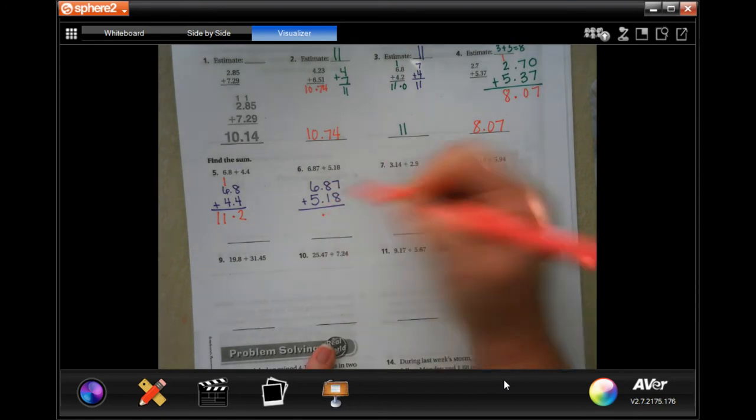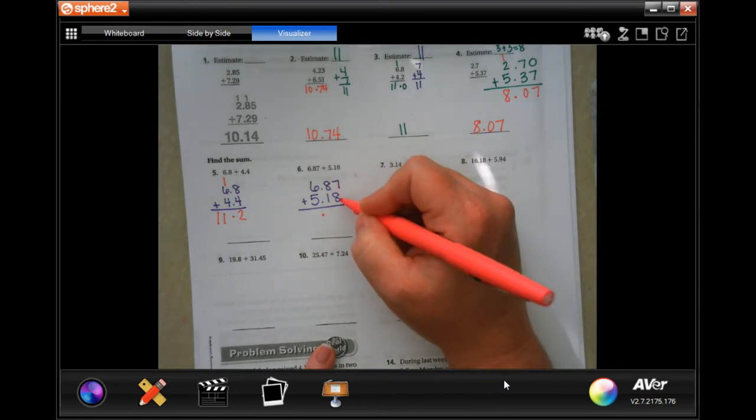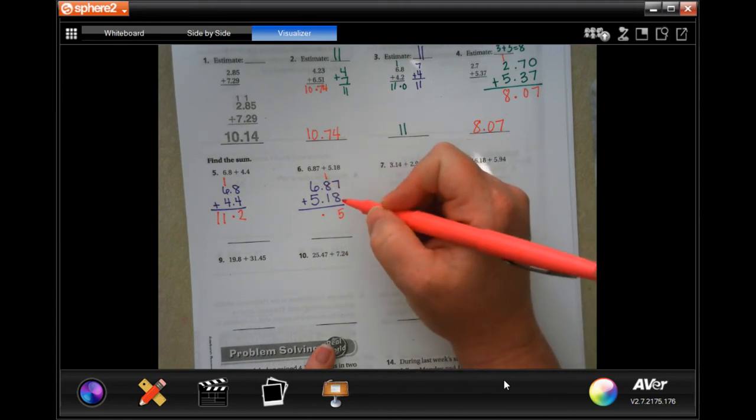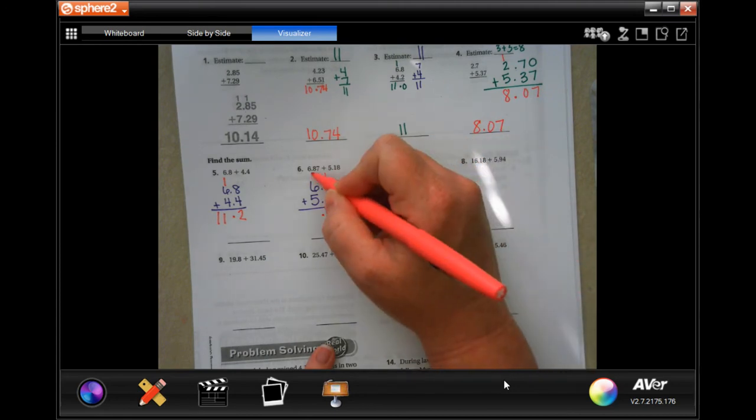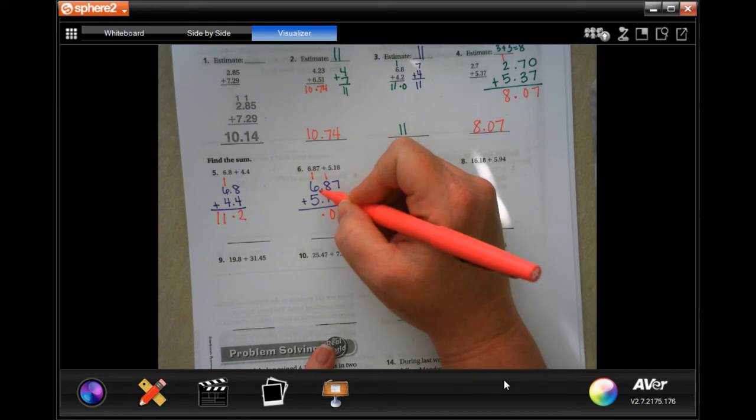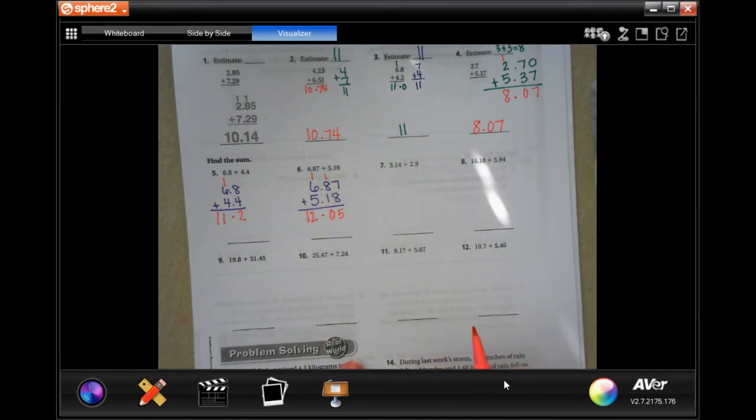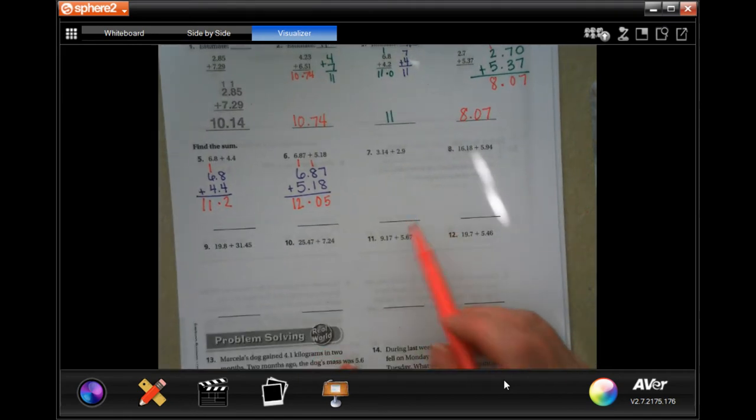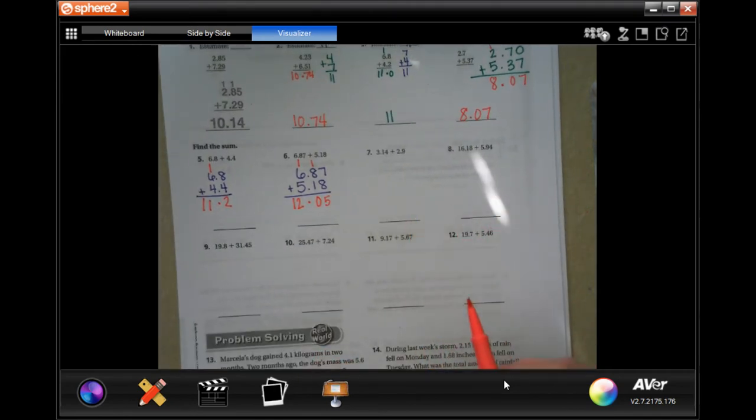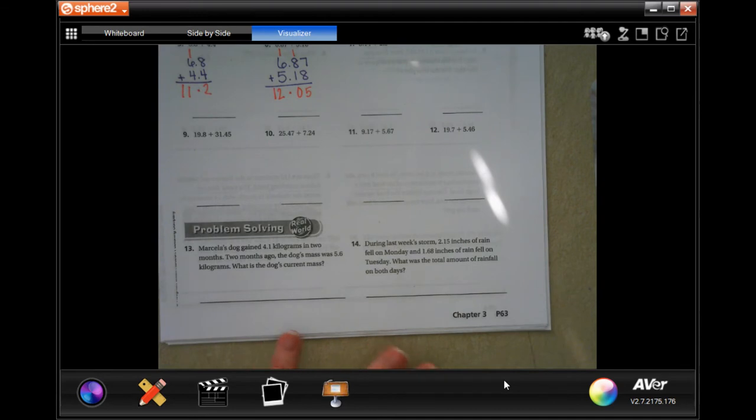Same thing here. Drop the decimal first. 7 plus 8 is 15, carry the 1. 1 plus 8 is 9, plus 1 more is 10, carry the 1. 1 plus 6 is 7, plus 5 more is 12. 12.05. You guys do 7 through 12. You totally can. I believe in you.